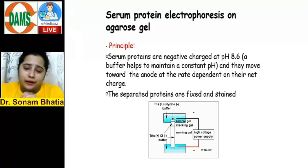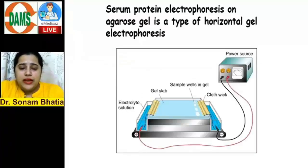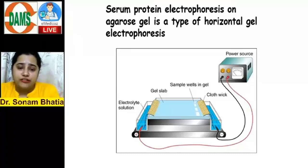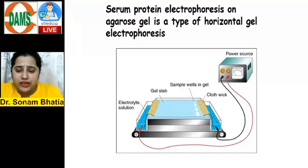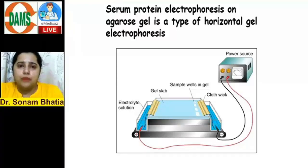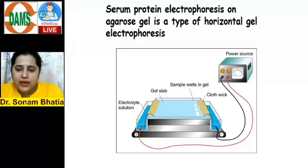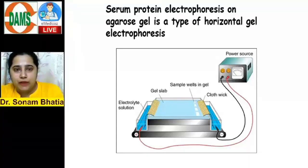Serum protein electrophoresis on agarose gel is a type of horizontal gel electrophoresis. You have an electrolyte solution and a gel slab, with a cloth wick so that both sides are dipped in the aqueous medium. Small wells are created in the gel where we load the sample, and then with a power supply, the proteins will move towards the positively charged electrode.